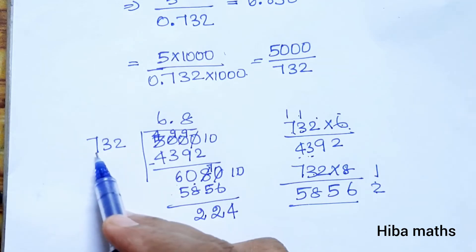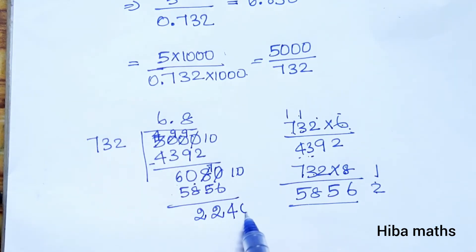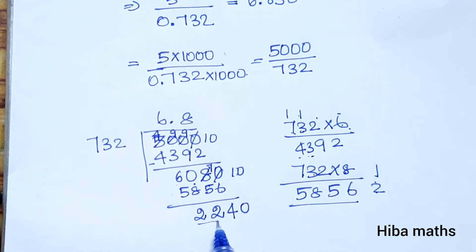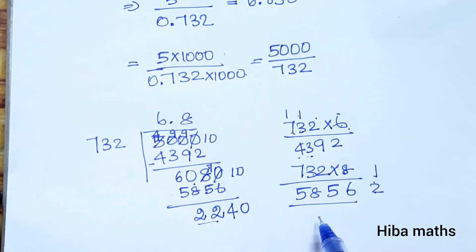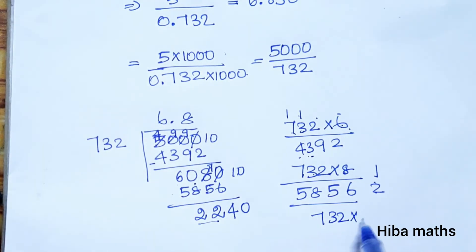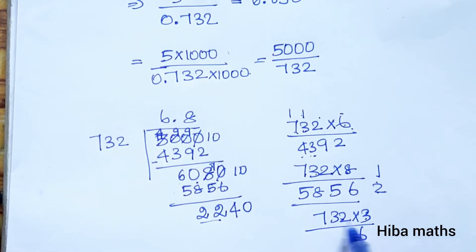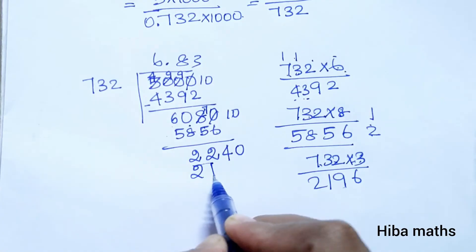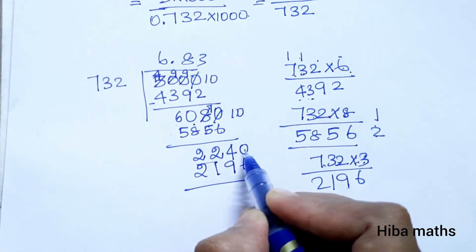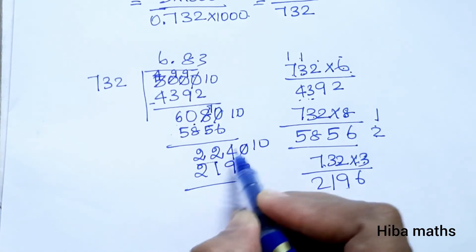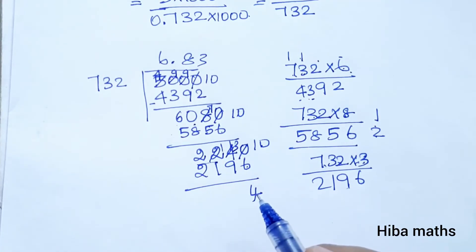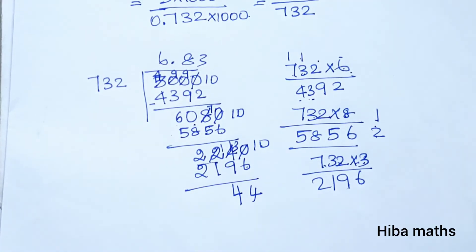60 minus 58 is 2. We add 0. Now 7 table: 22 — around 21 — 7 times 3. So 732×3: 3×2 is 6; 3×3 is 9; 3×7 is 21. This gives 2196. Subtract: 10 minus 6 is 4; 1 plus 3 gives 4; total balance is 4.